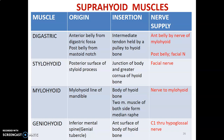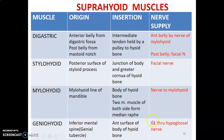The digastric muscle has two bellies: the anterior belly, innervated by the nerve to mylohyoid, and the posterior belly, innervated by the facial nerve. This is because the anterior belly derives from the first pharyngeal arch, innervated by the mandibular division of the trigeminal nerve, while the posterior belly comes from the second pharyngeal arch, whose nerve is the facial nerve. Stylohyoid is innervated by the facial nerve. Mylohyoid is innervated by the nerve to mylohyoid from the mandibular nerve. Geniohyoid is innervated by C1, which hitchhikes on the hypoglossal nerve to reach the muscle.